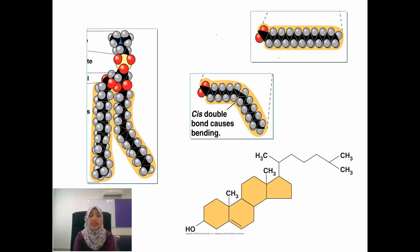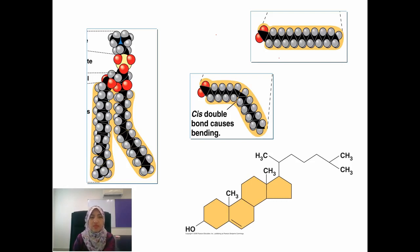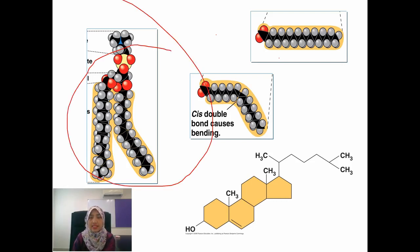Can you identify three types of lipids in this diagram? In this diagram you can see there is a phospholipid, and there are two fatty acids — a saturated fatty acid and an unsaturated fatty acid. And this one here is a steroid.